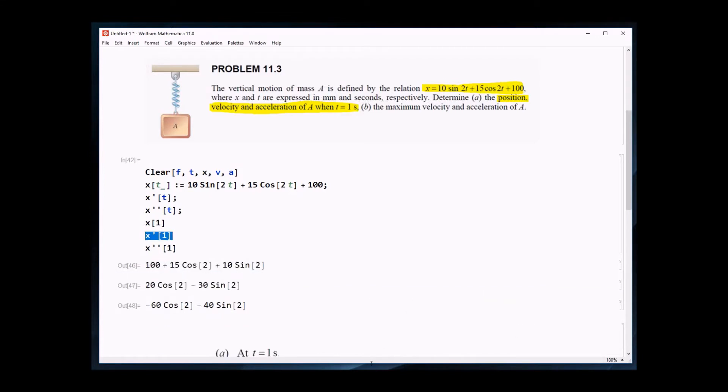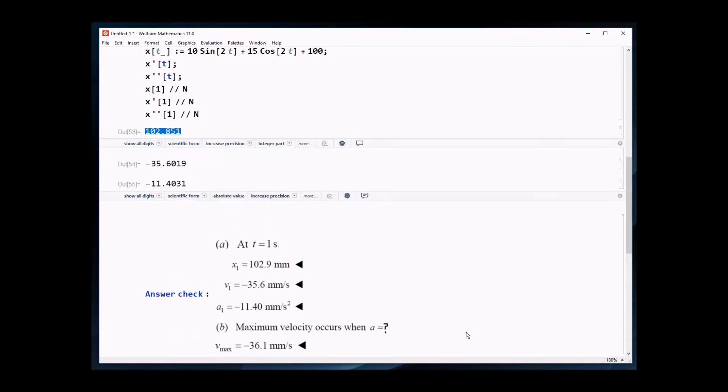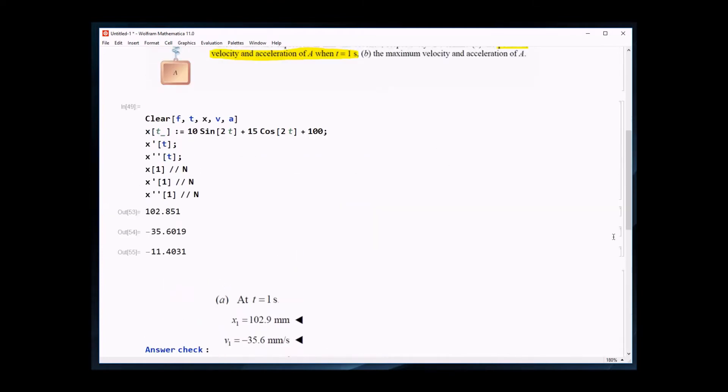So now what it's showing here is x of 1. So again, it's just plugging in a number for everywhere it sees a time here. So there's our acceleration on there. And now to turn it into a number, slash slash n turns it into a number, and this is going to evaluate all those functions for us when time equals 1. And we can come down here and check our answer. So at time equals 1 second, this is where our position is, that's where our velocity is, that's where our acceleration is. And it checks out. We got the right answer.